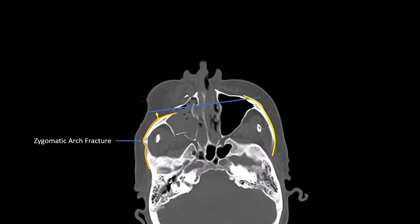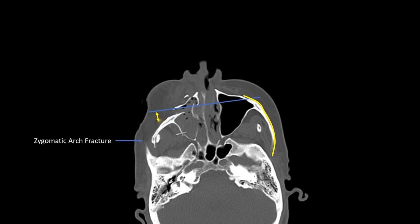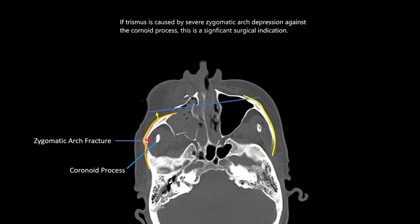You can see a zygomatic arch fracture noted. One thing to note is the normal curvature of the zygomatic arch highlighted in yellow, while the fracture side shows the zygomatic arch shape has been grossly distorted. This section of the zygomatic arch can sometimes be depressed, and if depressed further, it can potentially push up against the coronoid process of the mandible and result in trismus. If you see trismus from severe zygomatic arch depression, this is a surgical indication because the patient will not be able to open their mouth. In this case, due to the lack of significant zygomatic arch depression, I would anticipate the patient to have near-normal mouth opening once pain is controlled.